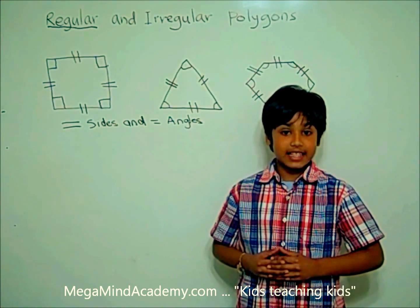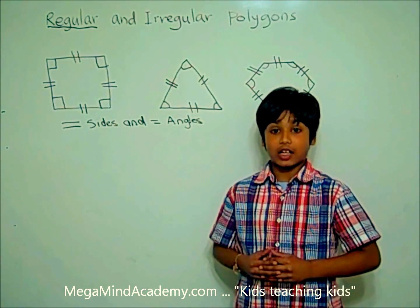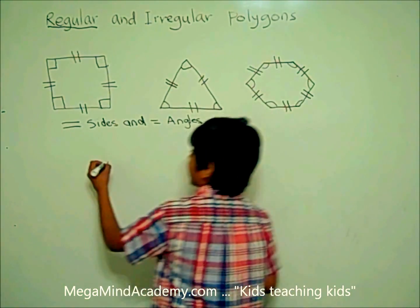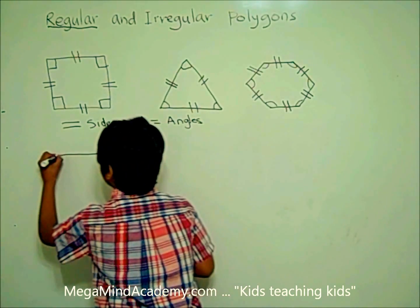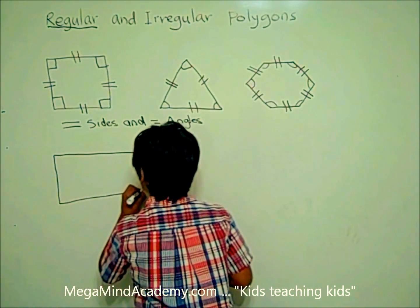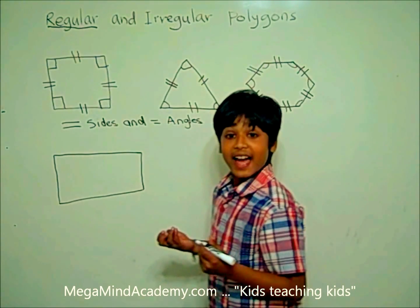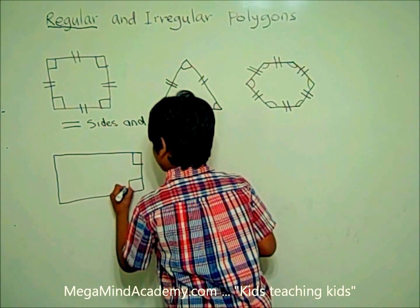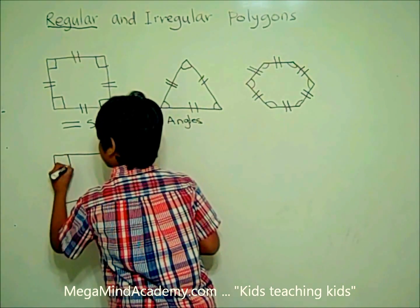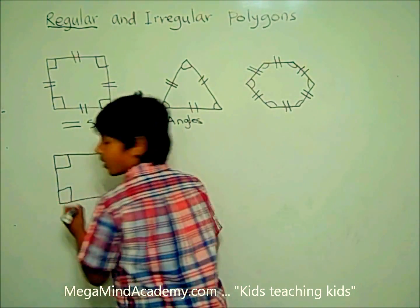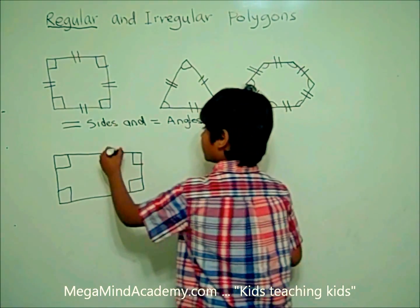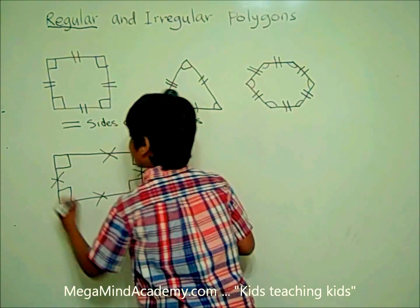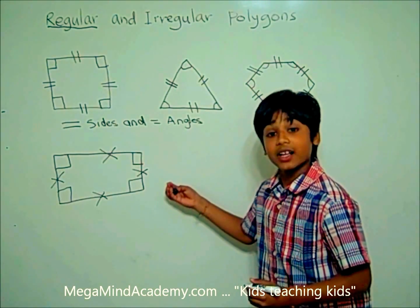Let's look at some examples of irregular polygons. A rectangle is an example of an irregular polygon. It may have all the angles the same, but all its sides are not the same. So a rectangle is an irregular polygon.